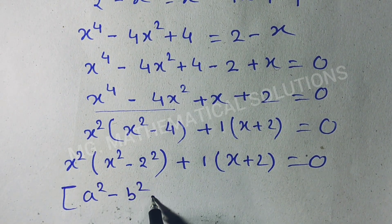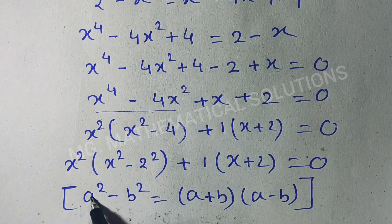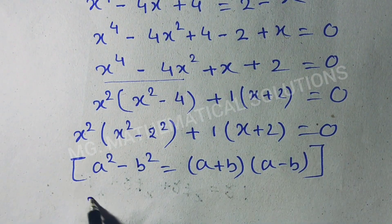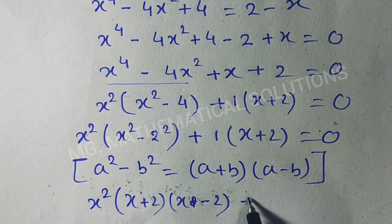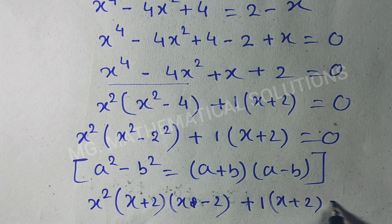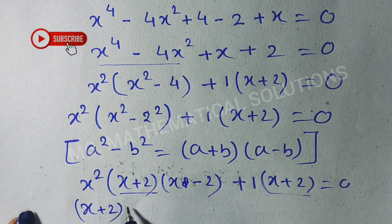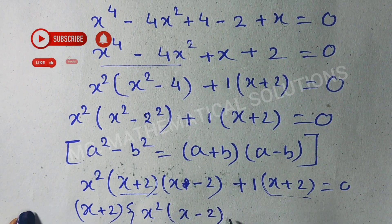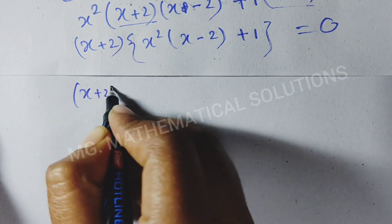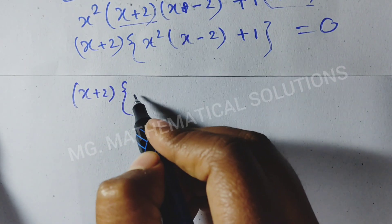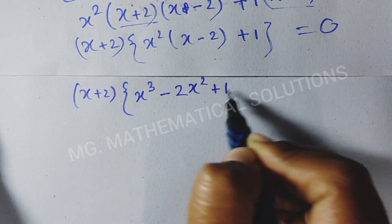We use the formula a squared minus b squared equals (a plus b)(a minus b). Here a means x and b means 2. So: x squared times (x plus 2)(x minus 2) plus 1 times (x plus 2) equal to 0. Now we take (x plus 2) as a common factor.